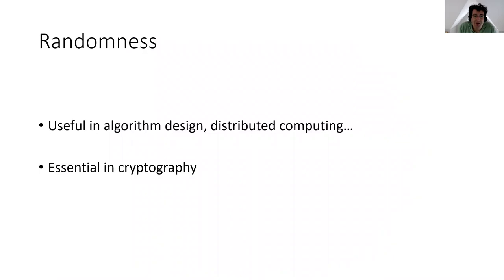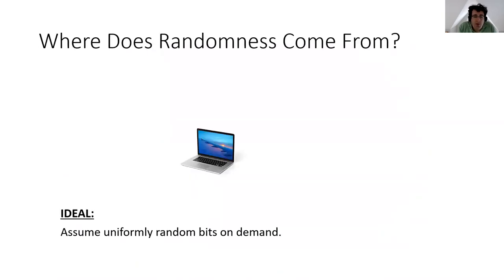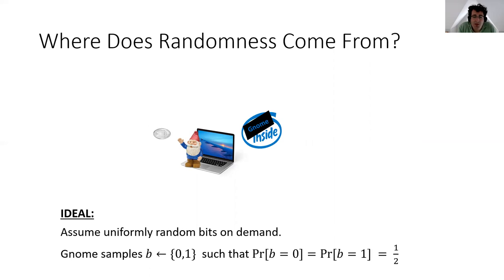Randomness is incredibly useful in many areas of computer science — algorithm design, distributed computing, and many other areas — and it's absolutely essential for cryptography. Usually when we design cryptosystems, we just assume we are in some ideal model where we can sample uniformly random bits on demand. But where does this randomness actually come from? From a theory point of view, we just imagine we have this gnome who lives inside the computer, and every time our cryptosystem needs a fresh random bit, the gnome tosses a coin and tells us the outcome.